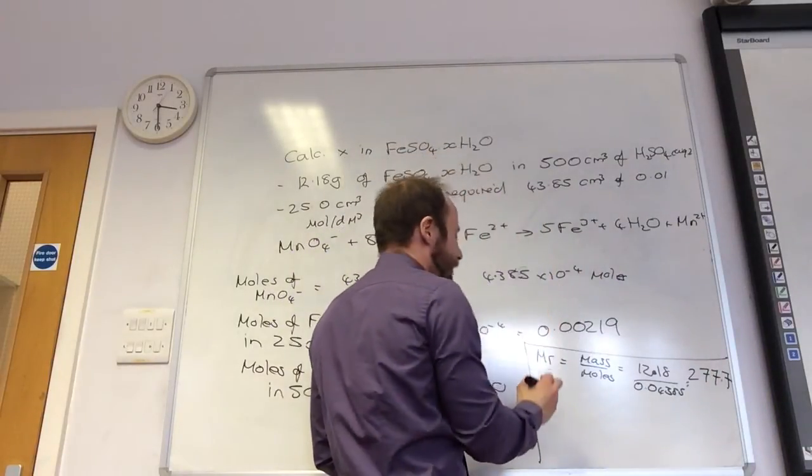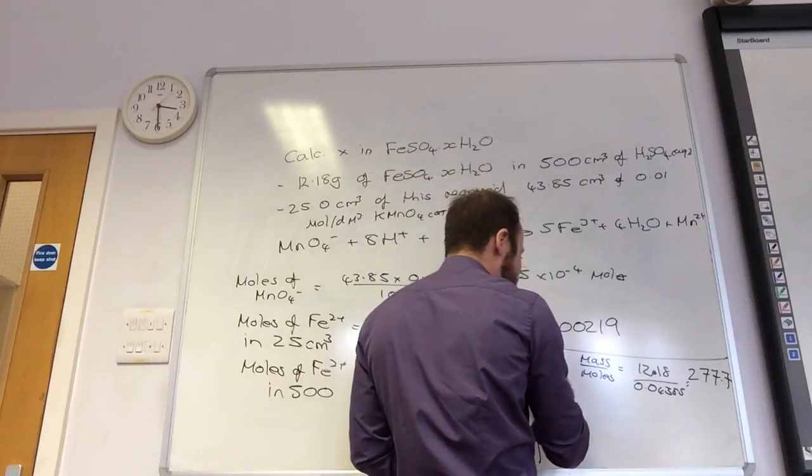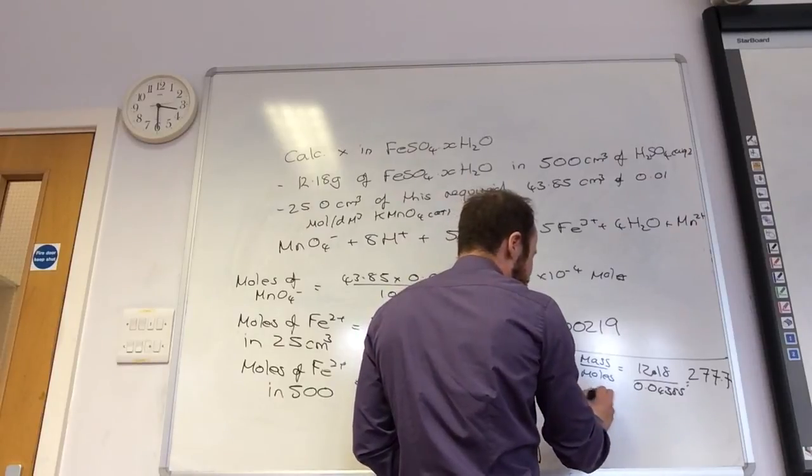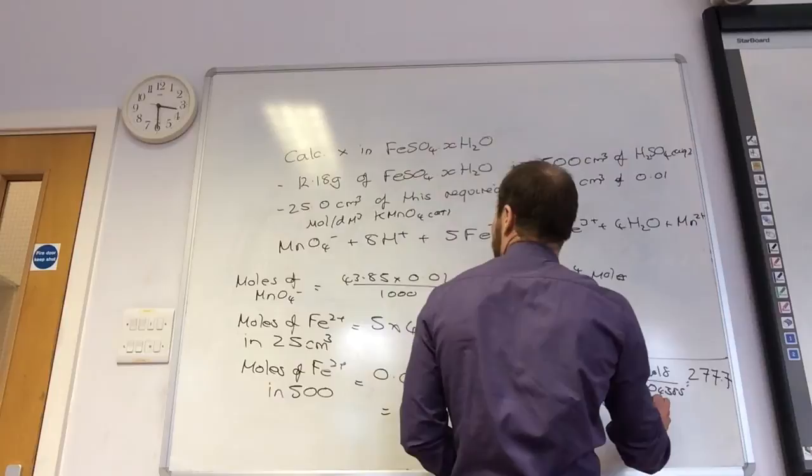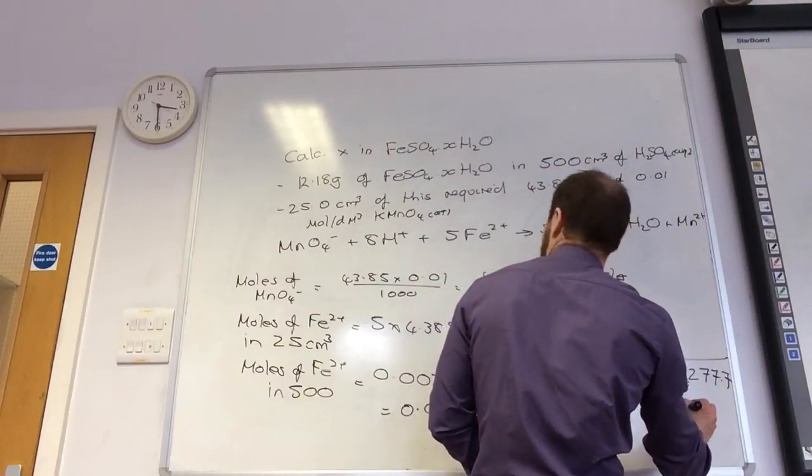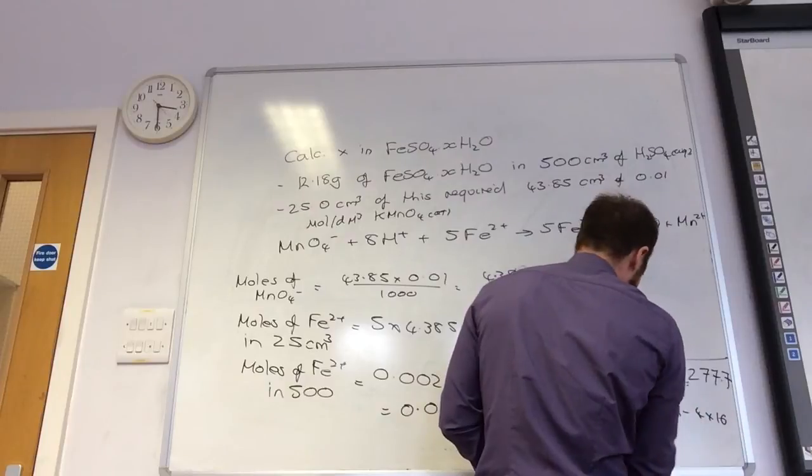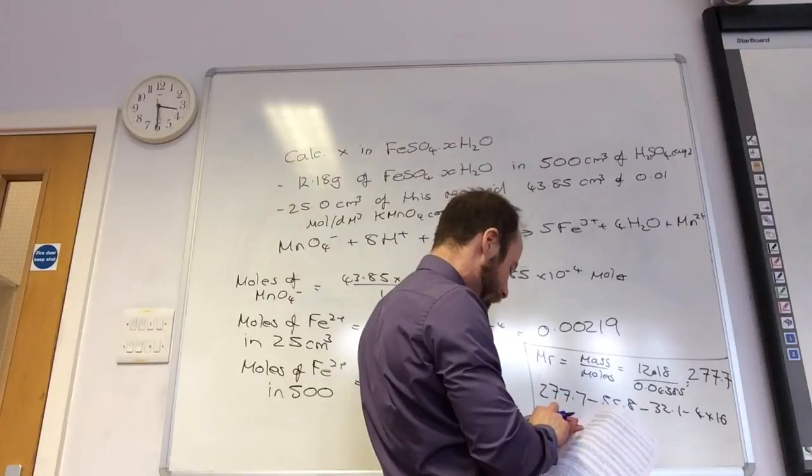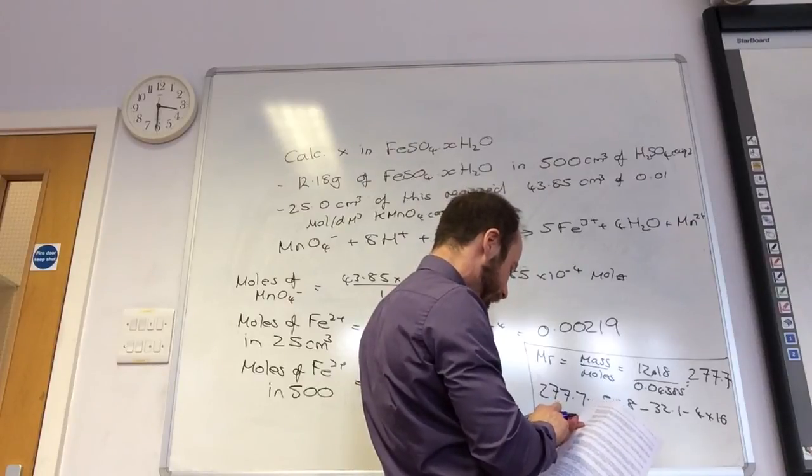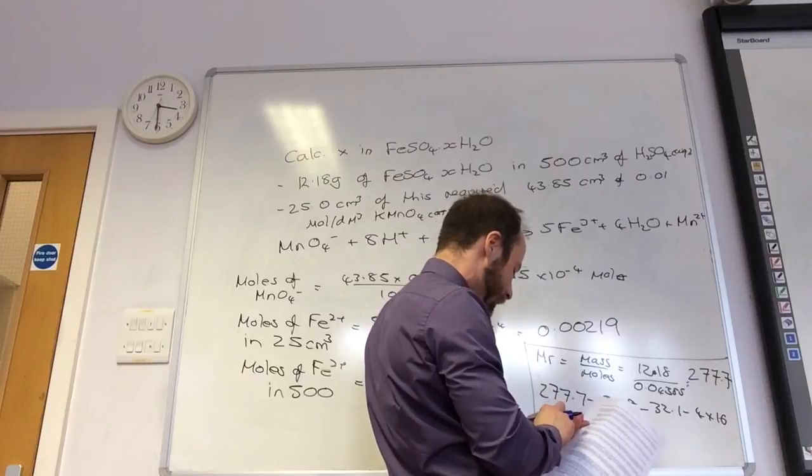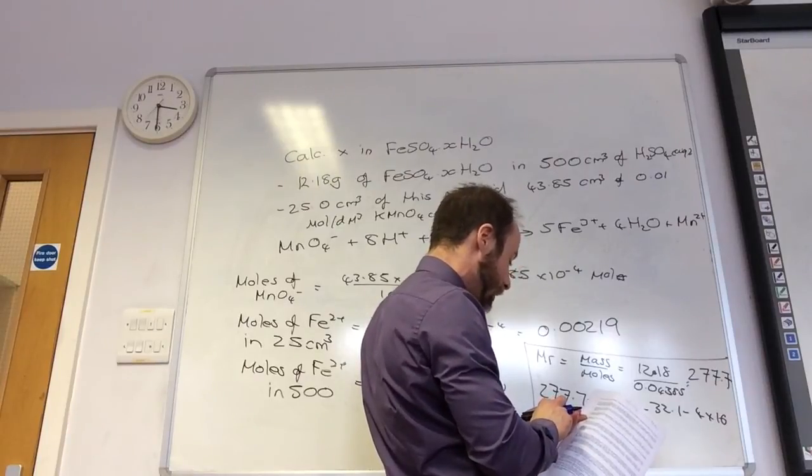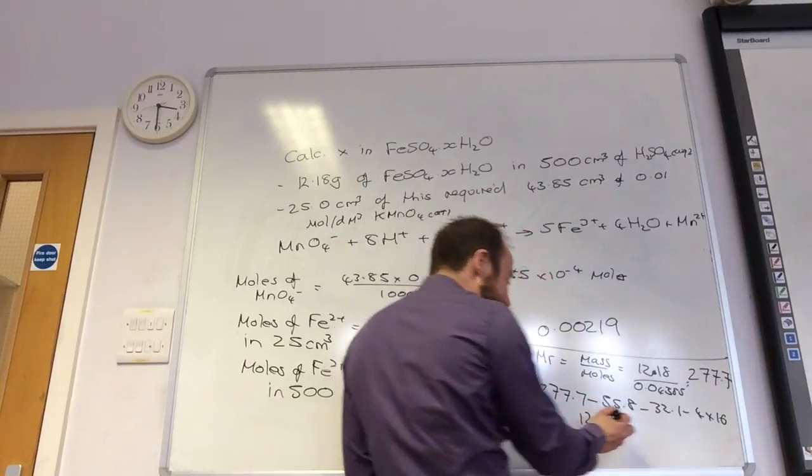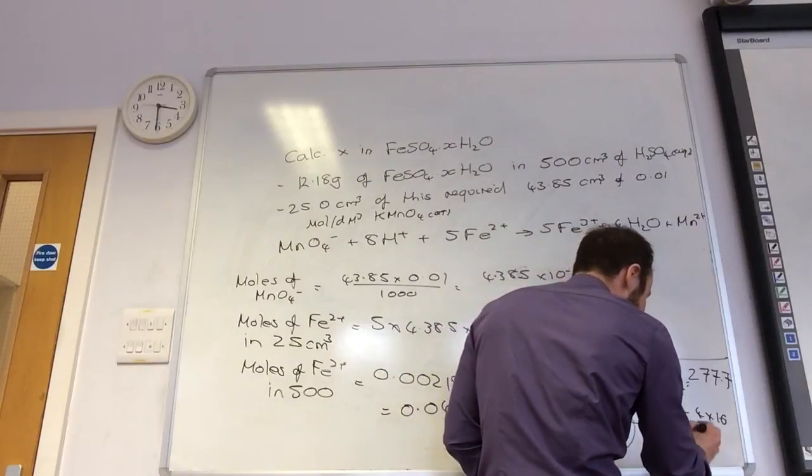Okay. Then what do I need to do? I need to find X. So, I need to take away. Molar mass. Yeah. So, I got 277.7 minus iron which is 55.8 minus sulfur which is 32.1 minus 4 times 16 for the oxygen. Let's do that. 277.7 minus 55.8 minus 32.1 minus 64. 124. Yep. 125.8.